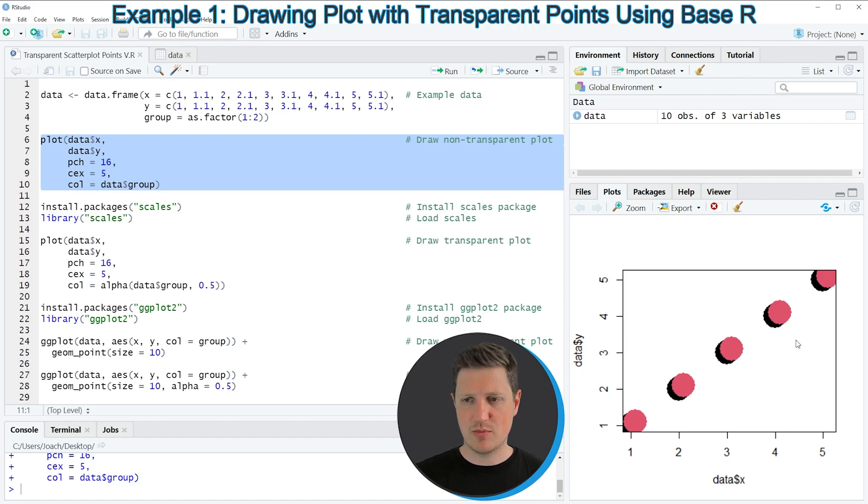And you can see that in this scatterplot, we have shown 10 points, 5 black points and 5 red points. And you can also see that the red points are overlapping the black points. Now let's assume that we want to make these points transparent to see the black points in the background a bit better.